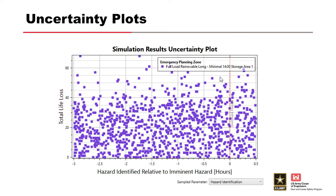We then ask: is the uncertainty range of 3 hours before to a half hour after breach reasonable? Is there a possibility we could identify the hazard even sooner? What happens if we identify it even later? For example, at an SQRA, if everyone is discussing whether cameras at a project would help reduce life loss by noticing the imminent hazard sooner — if life loss is not strongly correlated with hazard ID time, adding cameras may not change life loss enough to change risk decisions. You might want to explore what happens if you can identify the hazard 6 hours before.